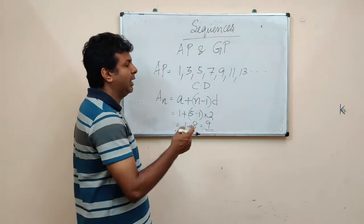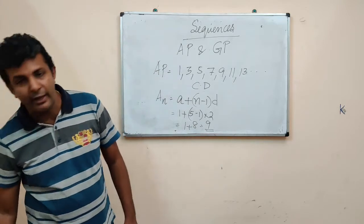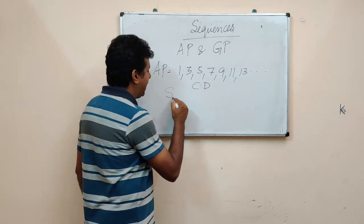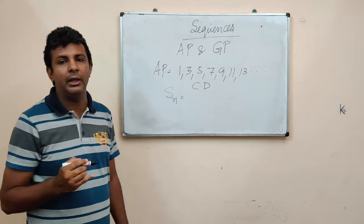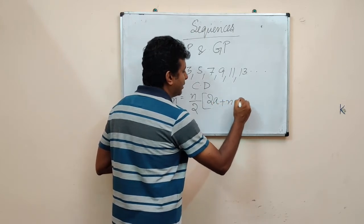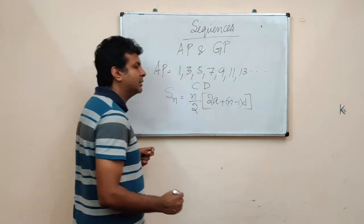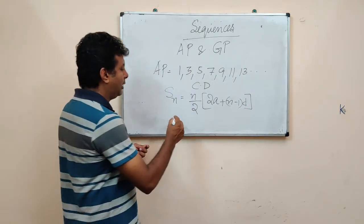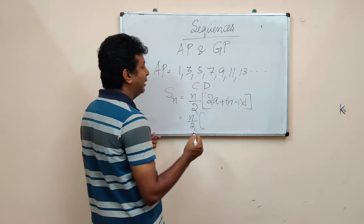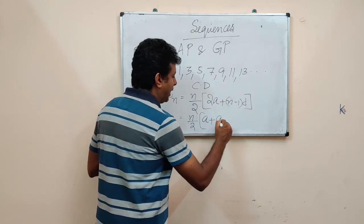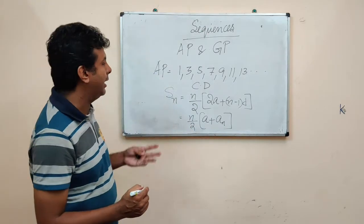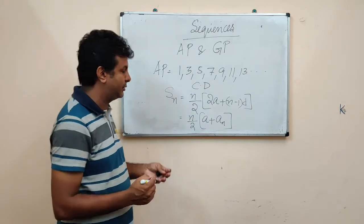Now the second thing we are very interested in is sum to n terms. Sum to n terms of an AP is n/2 multiplied by (2A plus (n minus 1) into D). Alternatively, it is n/2 into (A plus AN), where AN is the nth term. Now let us look at this particular series and try to validate these two formulas.